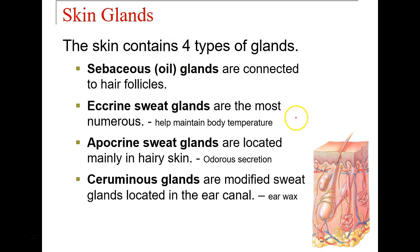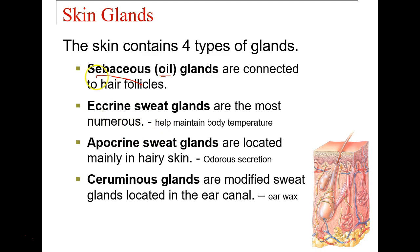Some of the glands found within the skin: we have sebaceous glands, or oil glands, connected to the hair follicles. On quizzes, I will call them oil glands. We have two different types of sweat glands: eccrine and apocrine.